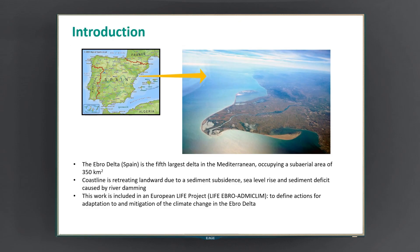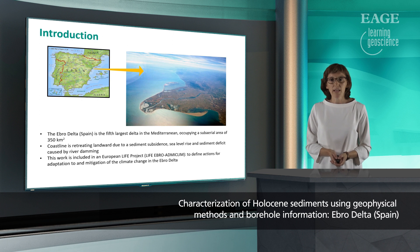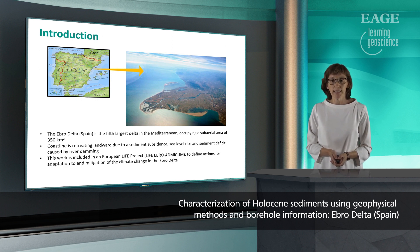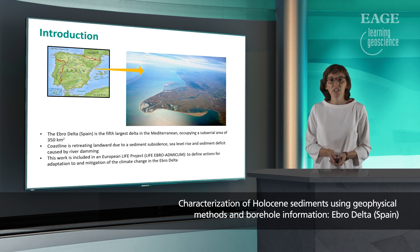The Ebro Delta in Spain is the fifth largest delta in the Mediterranean, occupying a sub-barrier area of 350 km². Nowadays, the Ebro Delta coastline is retreating landward due to a combination of sediment subsidence, sea level rise, and sediment deficit caused by river damming. This work is included in a European Life project focused on defining actions for adaptation to and mitigation of climate change in the Ebro Delta. Within this framework, it is necessary to measure spatial changes of the near-surface sediment, since variation of sediment properties directly bears on subsidence.